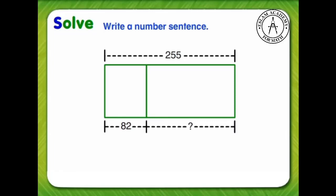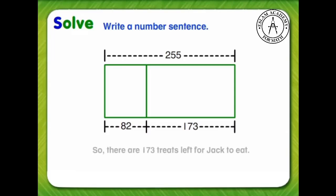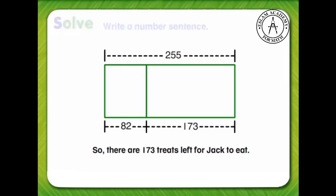We can subtract to find the missing number. 255 minus 82 equals 173. So, there are 173 treats left for Jack to eat.